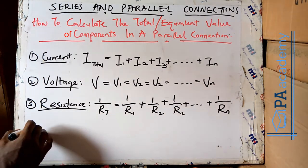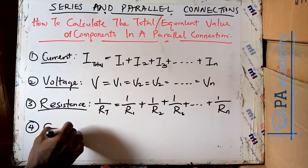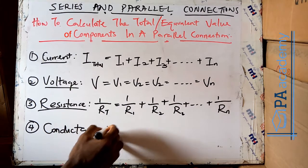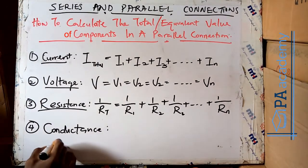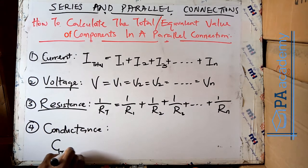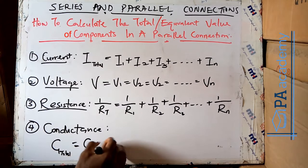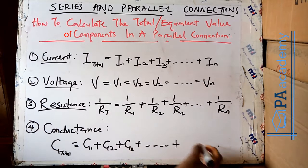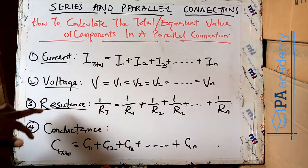Now let's look at number 4 — conductance. The total conductance, G_total, is equal to G1 plus G2 plus G3, and so on, depending on the total number of conductances — Gn. So that's it for current, voltage, resistance, and conductance.